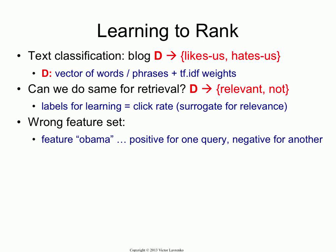Why is that? When you're predicting a small number of classes, some features will bear positive weights and some features will bear negative weights. So if you're detecting sentiment, some words indicate that they love us, some words indicate that they hate us, and you're learning an optimal combination of those words. But when you're doing retrieval, different words are positive and negative for different queries. You don't have a fixed set of classes. In classification you have a fixed set of classes; in retrieval you have an infinite number of queries, and each query has its own definition of what's relevant and non-relevant. So you cannot use words and phrases because they would basically conflict with each other.